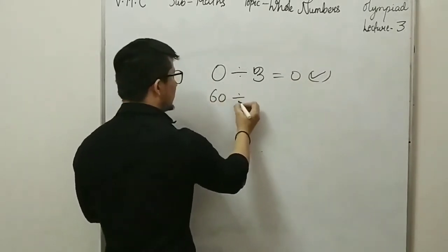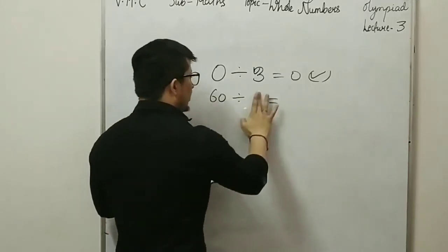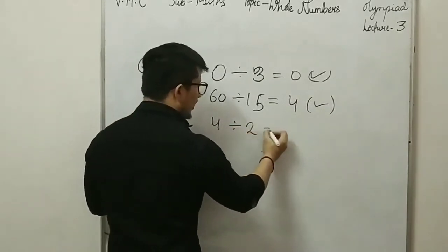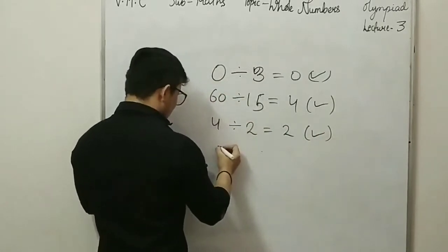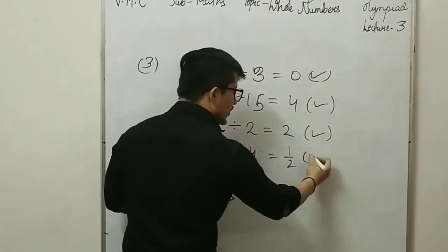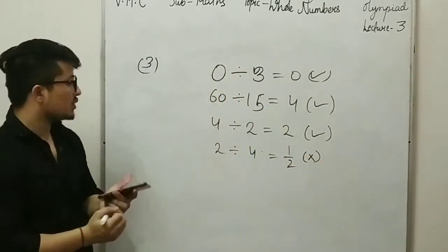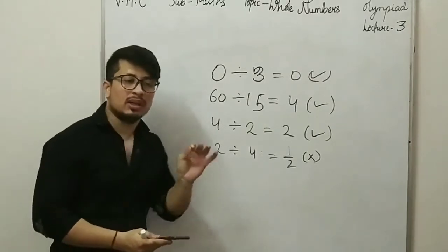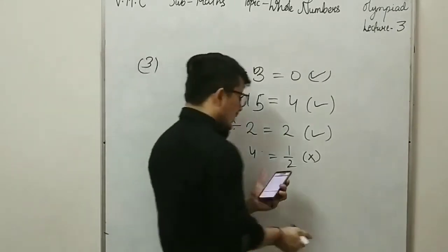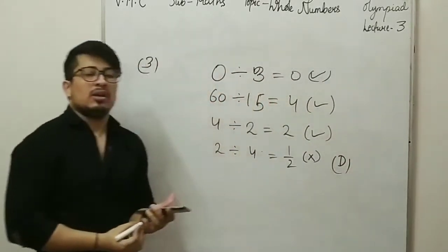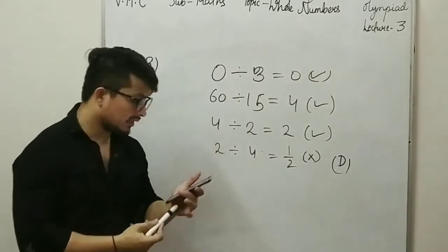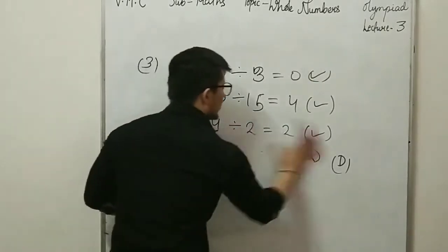Then 4 divided by 2 — the answer is 2, which is also a whole number. The last option gives an answer of 1.2, which is not a whole number. So we have to ask which one is closed under division. The answer 1.2 is not a whole number, so that option fails. The question asks which one demonstrates closure, so we identify the valid options.